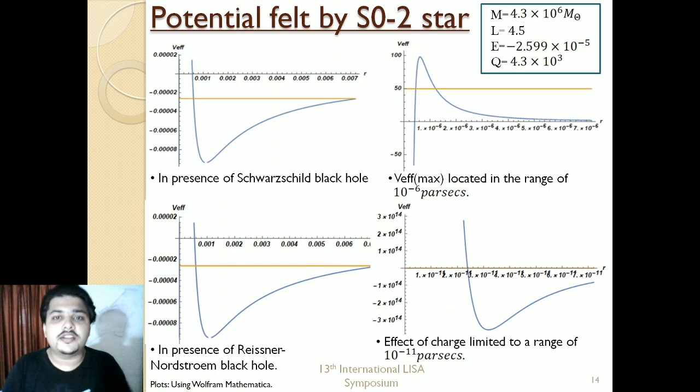But can you say where the effect of charge comes into picture? To understand that, we will have to look again at the potential that the S0-2 star feels in presence of Schwarzschild and in presence of Reissner-Nordström spacetime. Here you see the V maximum is located in the range of 10 to the power minus 6 parsec. The minimum is located somewhere in the range of our S0-2 star, obviously because it is orbiting. But if you see the Reissner-Nordström black hole, this here is the local minimum and this is the global minimum. The effect of the charge is in the range of 10 to the power minus 11 parsec, while our S0-2 star is located at 0.005 parsec. So we are not going to see an effective difference between them, and thus the central body is still a mystery.